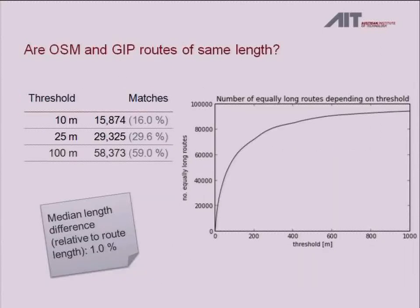If you wanted to define how many routes are similar using different thresholds: with a strict 10-meter threshold, 16% of those average 7-kilometer routes would match, and you can get up to almost 60% with a 100-meter threshold.